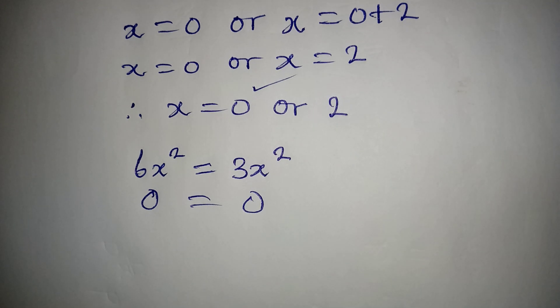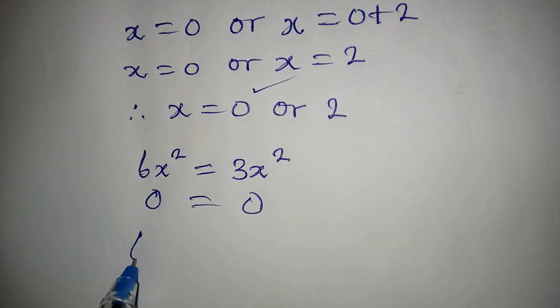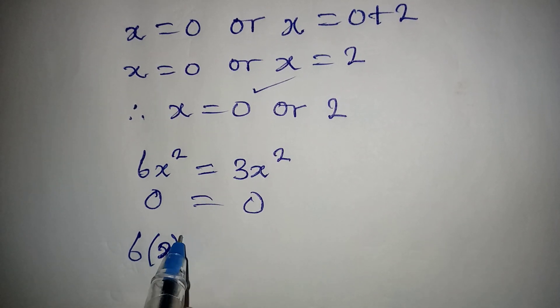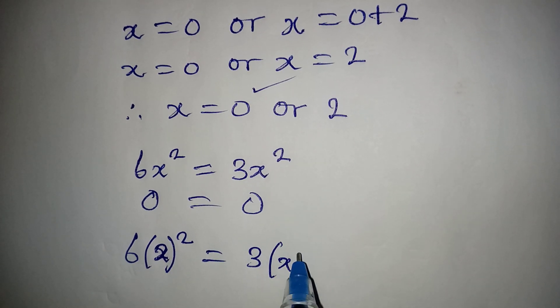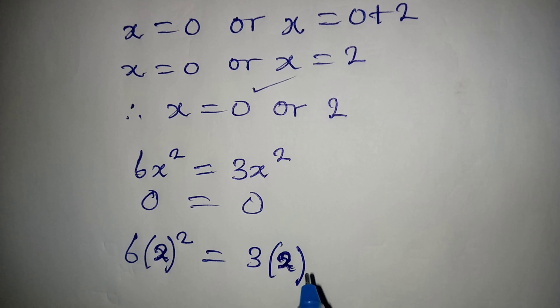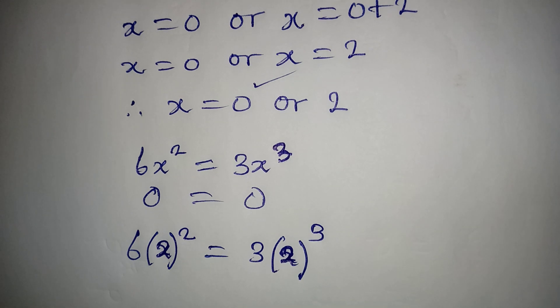And then if you put in x to be 2, you'll be having 6 into brackets, x is now 2, then we square this, equals 3 into brackets, x is now 2, and then we will raise this to the power of 3.